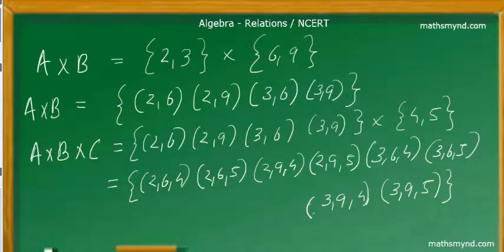A times B - as we already know, it's the first element from A with all the elements of B, and then go on. The next step is the second element of A, and so on. What we're getting are the ordered pairs: (2,6), (2,9), (3,6), and (3,9).